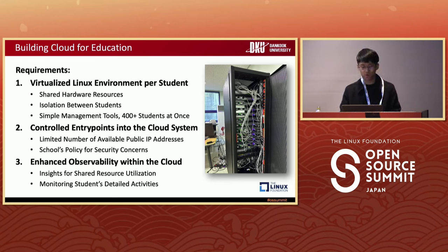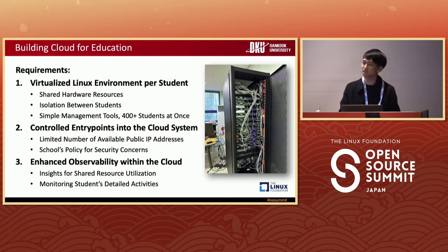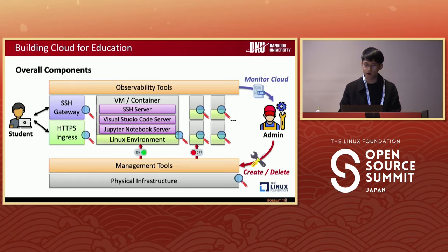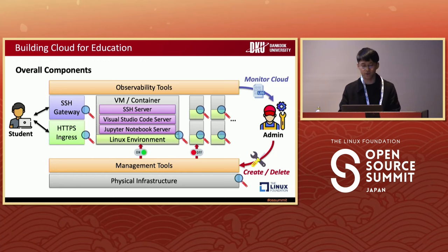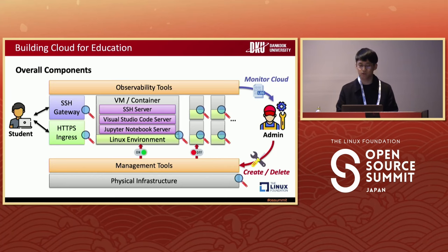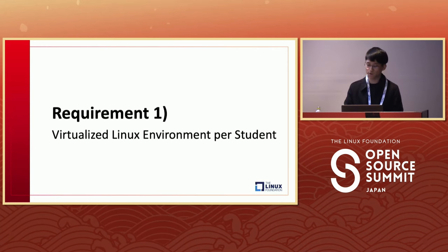Last but not least, we required enhanced observability within the cloud system. Since our resource pool was limited, we needed deep monitoring of shared resource utilization, as well as monitoring each student's detailed activities within their virtualized environment — which I'll discuss in later sections as it's the most important part. With those requirements, we created a cloud infrastructure consisting of an SSH gateway, HTTPS ingress, management tools for admins, and observability tools.